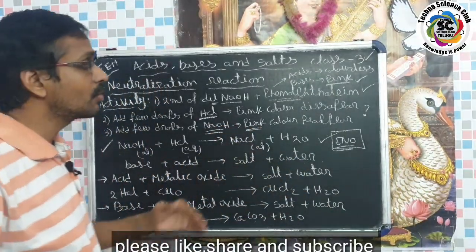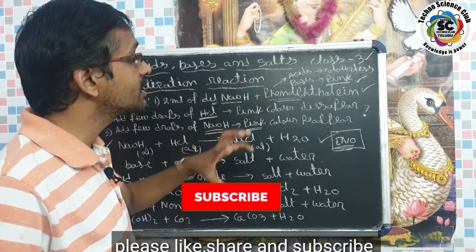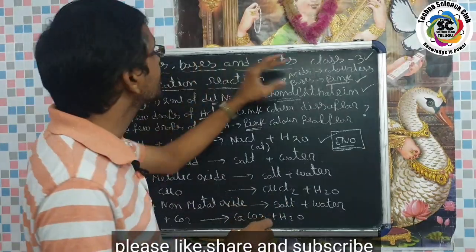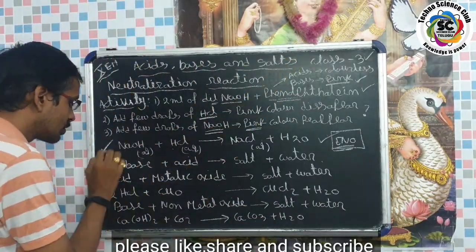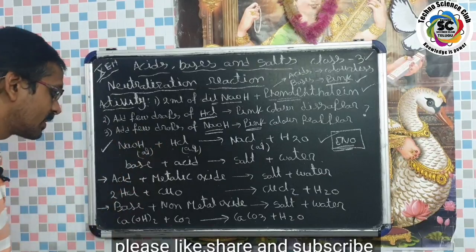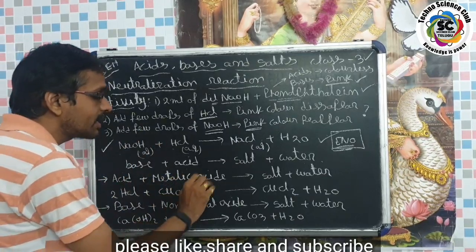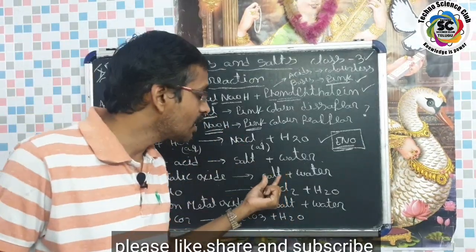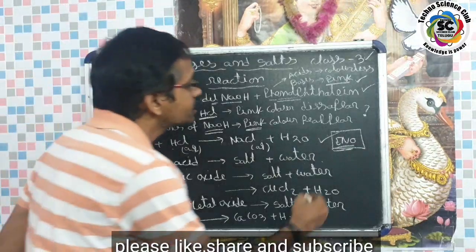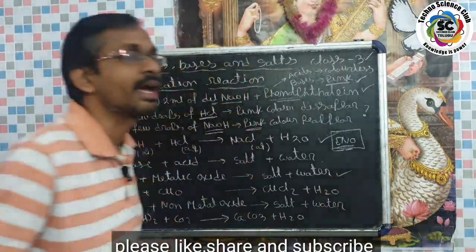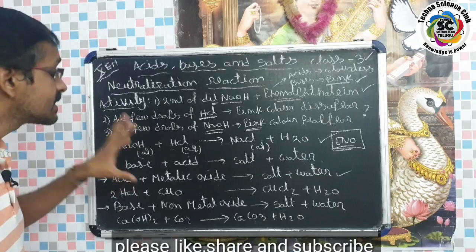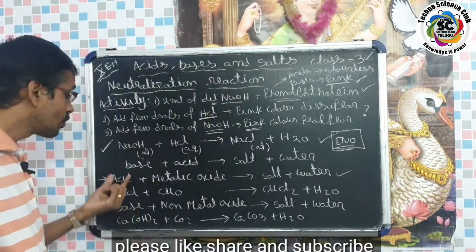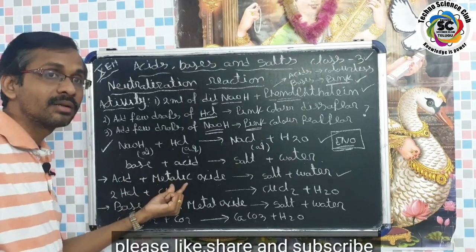The acids in the stomach cause the acidity problem, and this is a daily life example of a neutralization reaction. Moving to the next topic: acids react with metallic oxides to form salts and water. This is also a type of neutralization reaction, because metallic oxides act as bases.